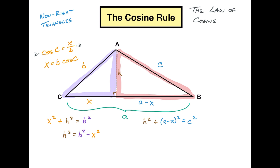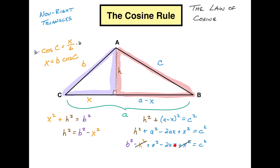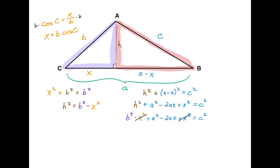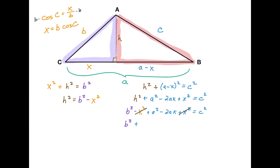If I expand (A minus X) squared, I get H squared plus A squared minus 2AX plus X squared equals C squared. I know that H squared equals B squared minus X squared, so substituting gives B squared minus X squared plus A squared minus 2AX plus X squared equals C squared. The X squared terms cancel out, and that remaining X equals B cosine C. So substituting, I get B squared plus A squared minus 2AB cosine C equals C squared. Rearranging, the cosine rule is: C squared equals A squared plus B squared minus 2AB cosine C.